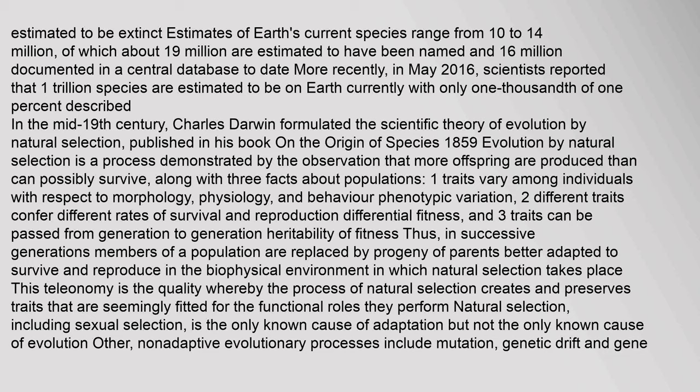In the mid-19th century, Charles Darwin formulated the scientific theory of evolution by natural selection, published in his book On the Origin of Species in 1859. Evolution by natural selection is demonstrated by the observation that more offspring are produced than can possibly survive, along with three facts about populations: (1) traits vary among individuals with respect to morphology, physiology, and behavior — phenotypic variation; (2) different traits confer different rates of survival and reproduction — differential fitness; and (3) traits can be passed from generation to generation — heritability of fitness.